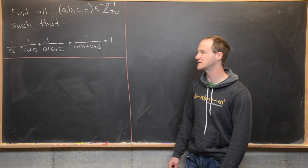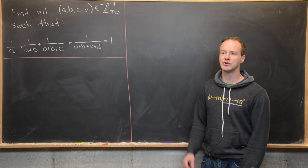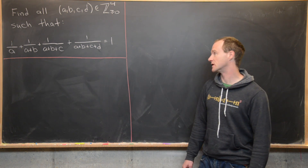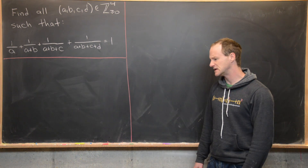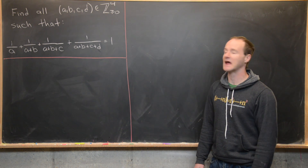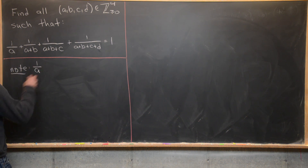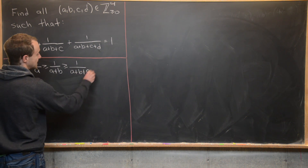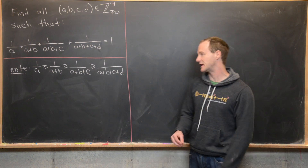There are actually a bunch of solutions. We're going to calculate a few by hand, and then show how to calculate all of them quickly in Mathematica at the very end. First, notice that the denominators are ordered from least to greatest, meaning the fractions are ordered from greatest to least — non-strictly, since we allow zeros. So 1/A ≥ 1/(A+B) ≥ 1/(A+B+C) ≥ 1/(A+B+C+D).